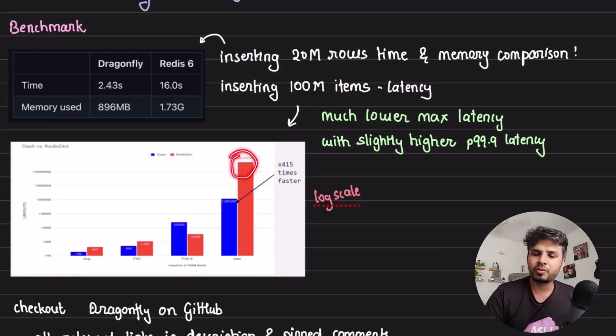Redis dictionary is very slow. On the other hand, dash tables are lightning fast, 415 times faster. But you see one anomaly.